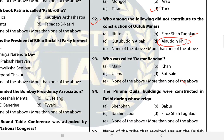It was named Qutub Minar after the famous Sufi Khwaja Qutbuddin Bakhtiyar Kaki. During the reign of Firoz Tughlaq, its fourth floor was damaged and he constructed two more stories in place of the fourth floor. Thus, instead of four stories, five floors were built, which are still present.